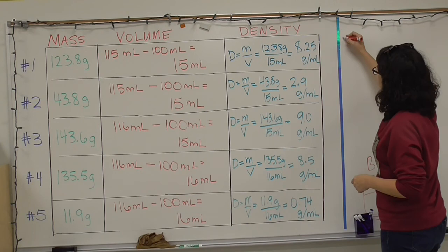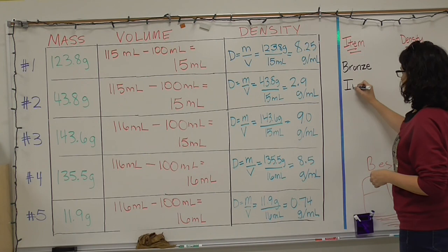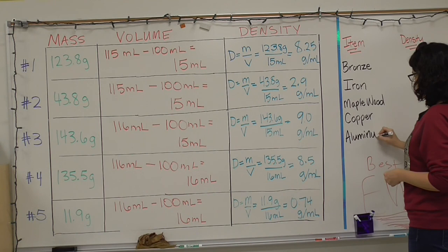And voila, these are our five items that we've been measuring. We have bronze, iron, maple wood, copper, and aluminum. And right beside them are their actual densities, grams per milliliters. So you can take our calculated densities that we've calculated, and you can compare them to this chart, and you can see which number is which item.